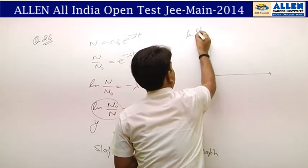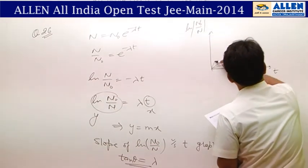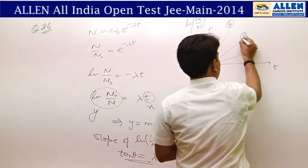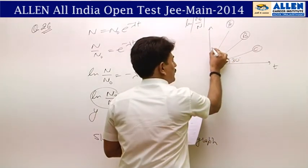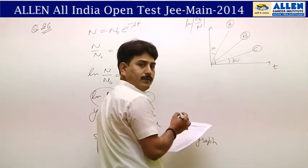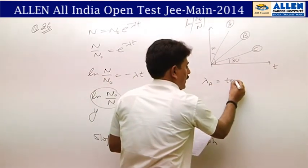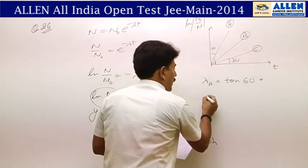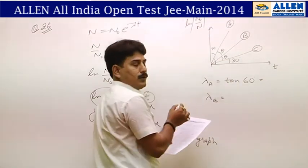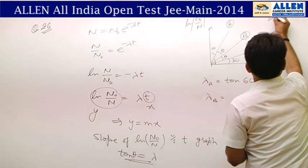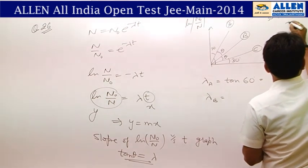From the graph, three straight lines are given — one for A, one for B, and one for C. The angle for decay A is 30° on one side and 30° on the other, giving a total angle of 60°. So λ_A = tan 60°. For λ_B, from the graph: 30° + θ + θ + θ + 30° = 90°, giving θ = 15°.